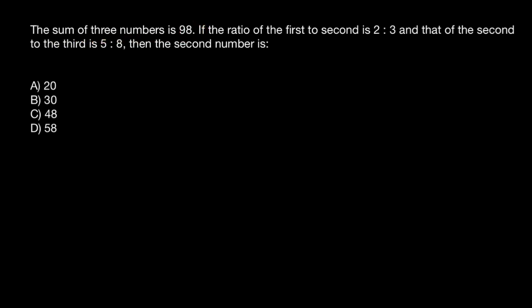The sum of three numbers is 98. If the ratio of the first to the second is 2 to 3, and that of the second to the third is 5 to 8, then the second number is, and we have to choose one of these answers.